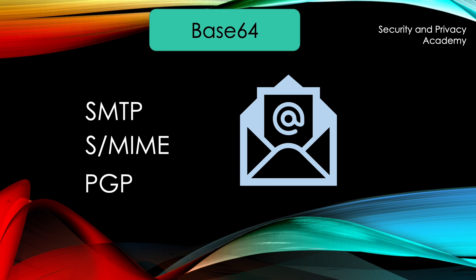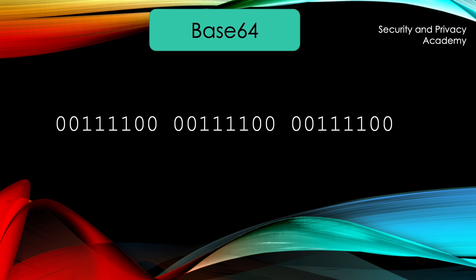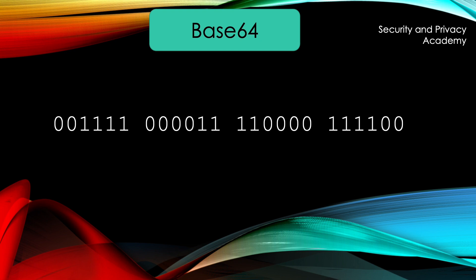Let's look at an example to see how it works. These are 3 bytes of the same character, the less-than sign. In order to encode it to Base64, we need to split them up into 6-bit intervals. This is also where the name Base64 comes from, since 2 to the power of 6 equals 64.